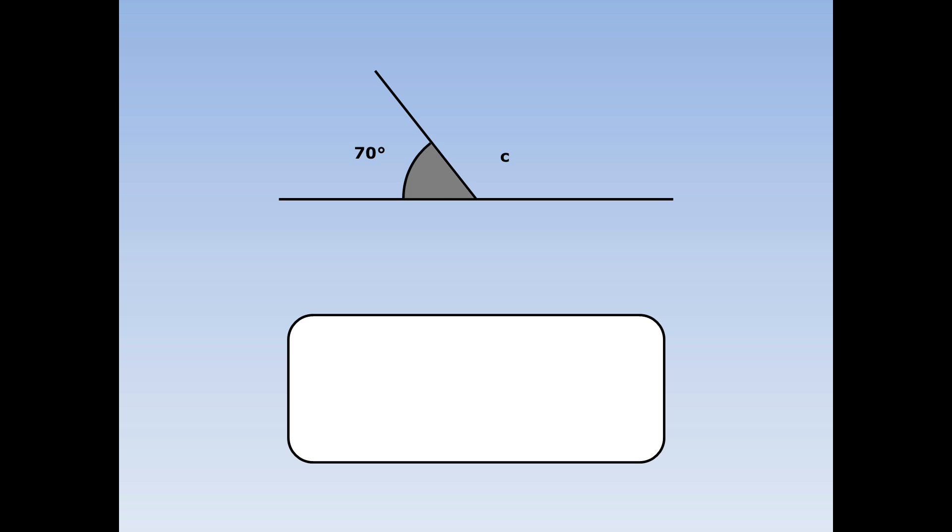On this straight line, 70 and C add up to 180. So to work out C, I'm going to do 180 take away 70 equals 110. C equals 110 degrees.